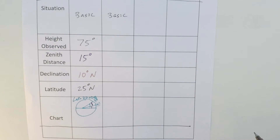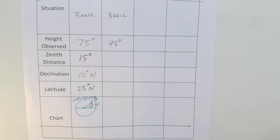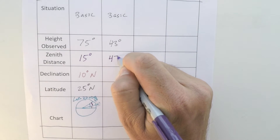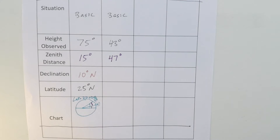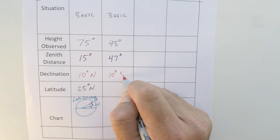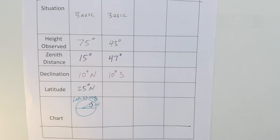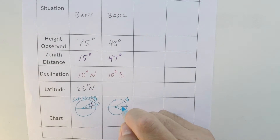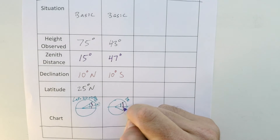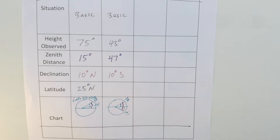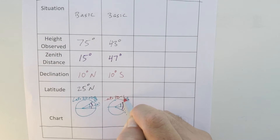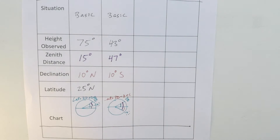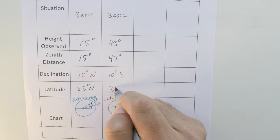Example two: we observe the Sun at 43 degrees above the horizon, so the zenith distance is 90 minus 43, or 47 degrees. Using the nautical almanac, if declination is 10 degrees south and we're in the northern hemisphere while the Sun is in the southern hemisphere, then latitude equals zenith distance minus declination. Doing that math, 47 minus 10, gives us a latitude of 37 degrees north.